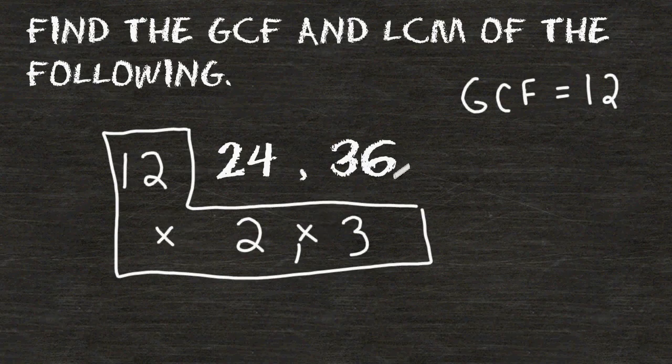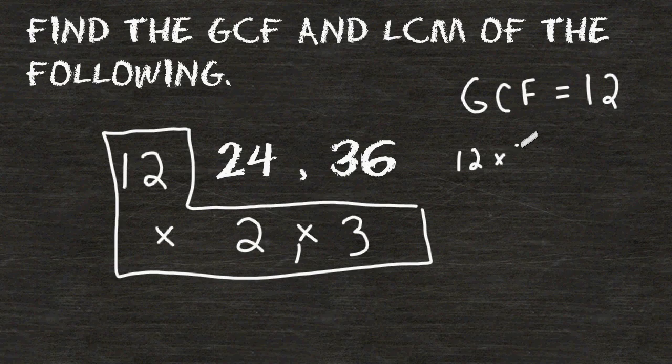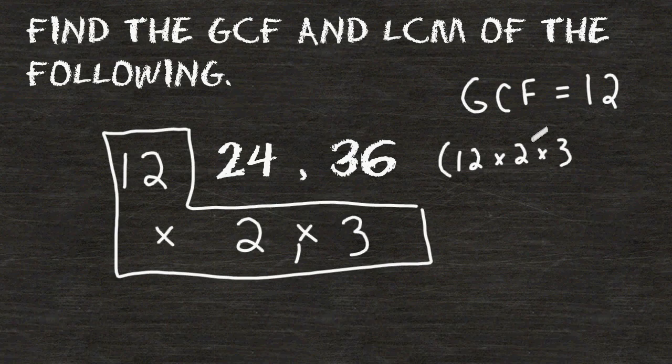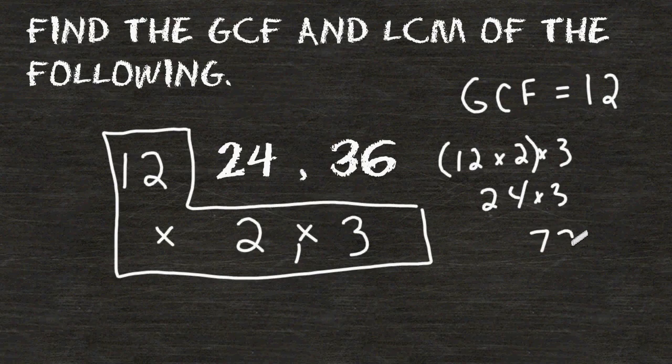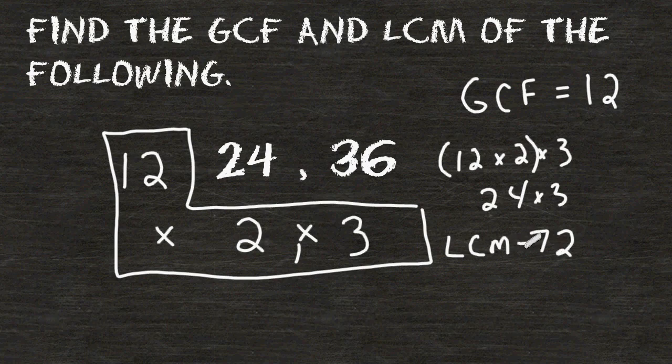So to find the LCM, we are going to multiply 12 times 2 times 3. And 12 times 2 is equal to 24, and 24 times 3 is equal to 72. So we would say that the least common multiple of 24 and 36 is equal to 72.